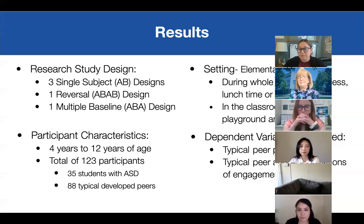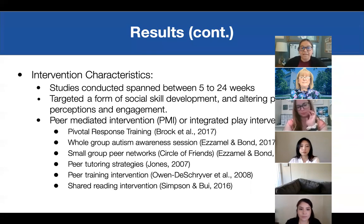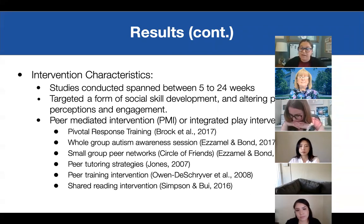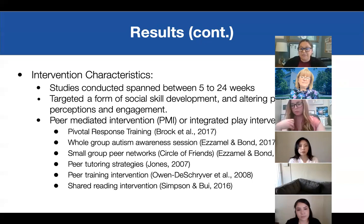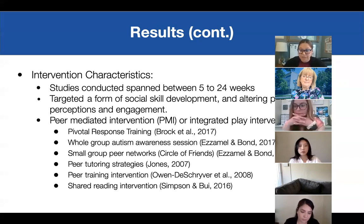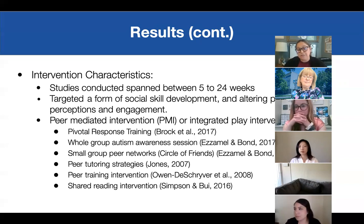Intervention characteristics: studies were conducted over a span of 5 to 24 weeks, targeting some form of social skill development or altering peer perceptions and engagement, involving peer-mediated or integrated play interventions. Strategies used included pivotal response training, whole group autism awareness sessions, small group peer networks like circle of friends, peer tutoring strategies, peer training interventions, and shared reading interventions.